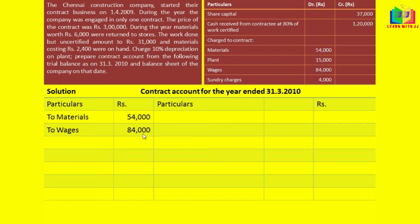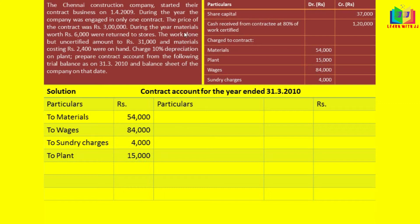Next one is sundry charges — I will write it on the debit side. And the next item is the plant. The value of the plant is 15,000, entered on the debit side. After that, the information was given regarding the material return.